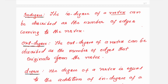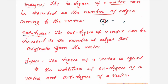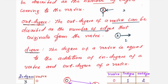In-degree of a vertex is defined as the number of edges coming into the vertex. For example, if vertex A has two incoming edges, the in-degree is 2. Out-degree of a vertex is defined as the number of edges originating from the vertex. If there is only one edge coming out, the out-degree is 1. The degree of a vertex equals the sum of in-degree and out-degree — so if in-degree is 2 and out-degree is 1, the degree is 3.